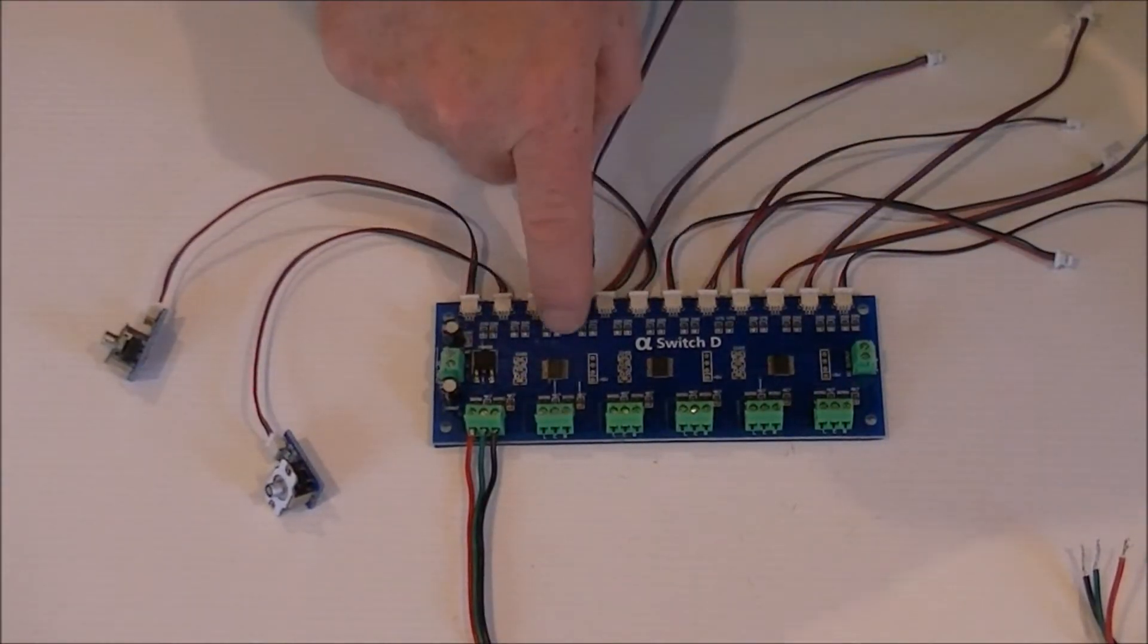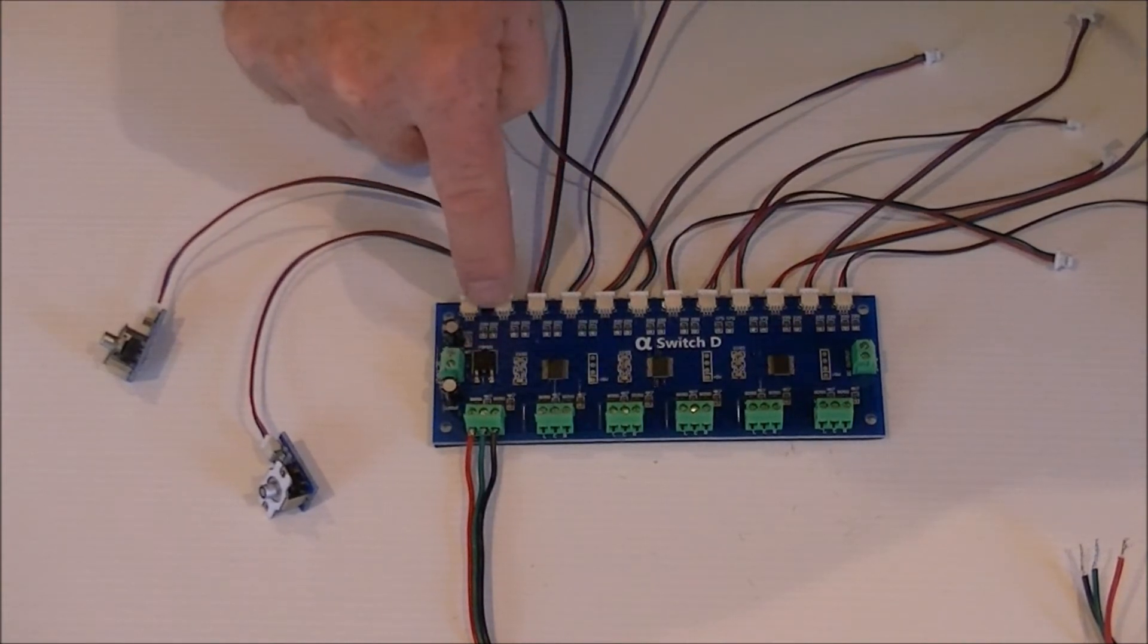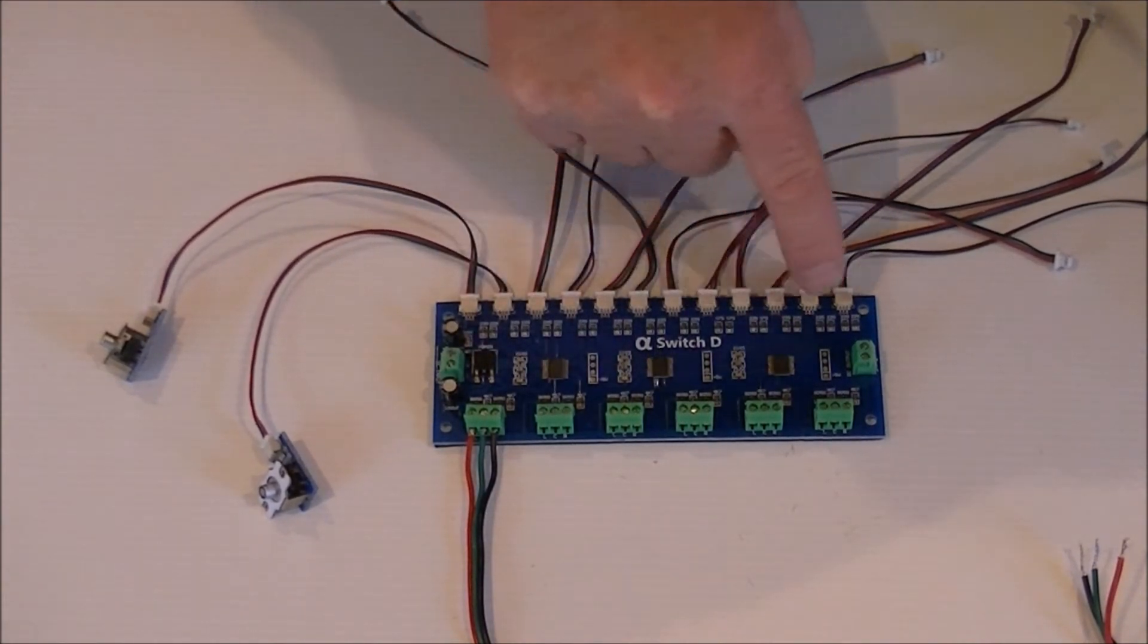The cobalt alpha switch, one board controls six motors or six addresses. These are your inputs. So you've got two, four, six, eight, ten, twelve inputs.